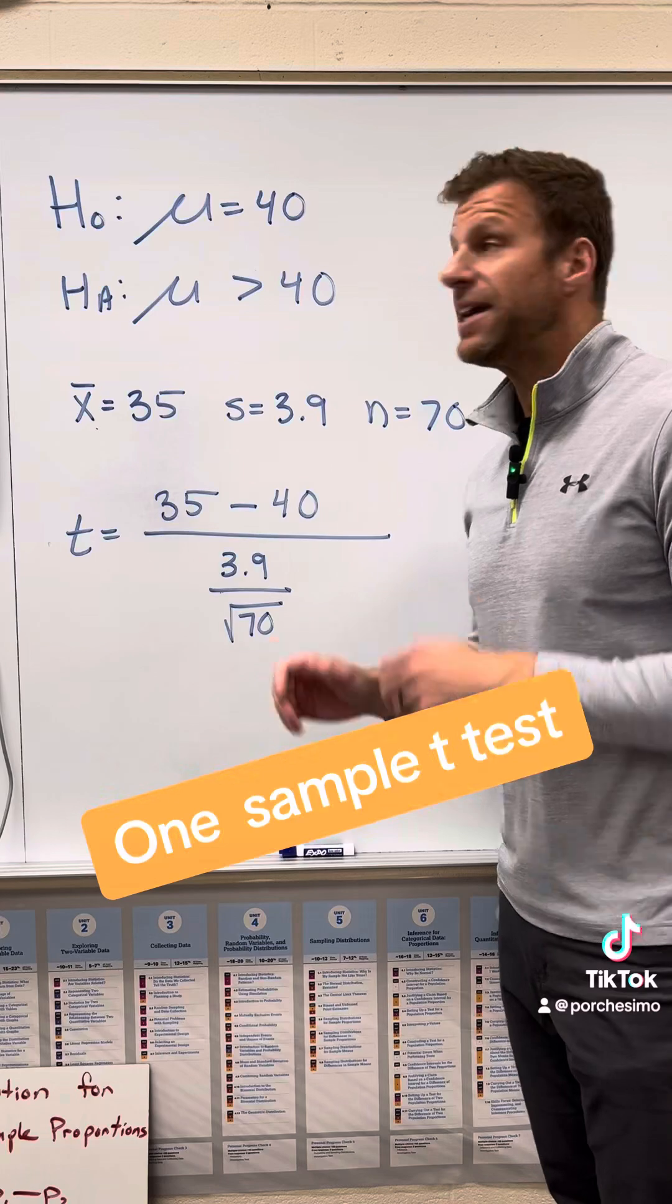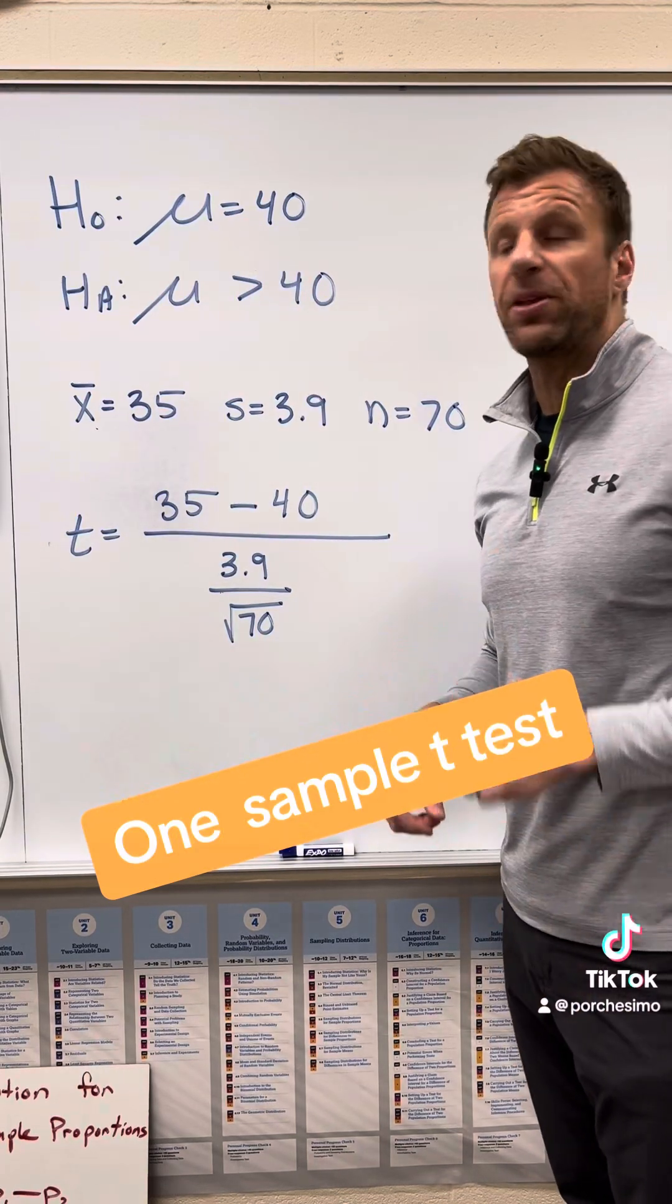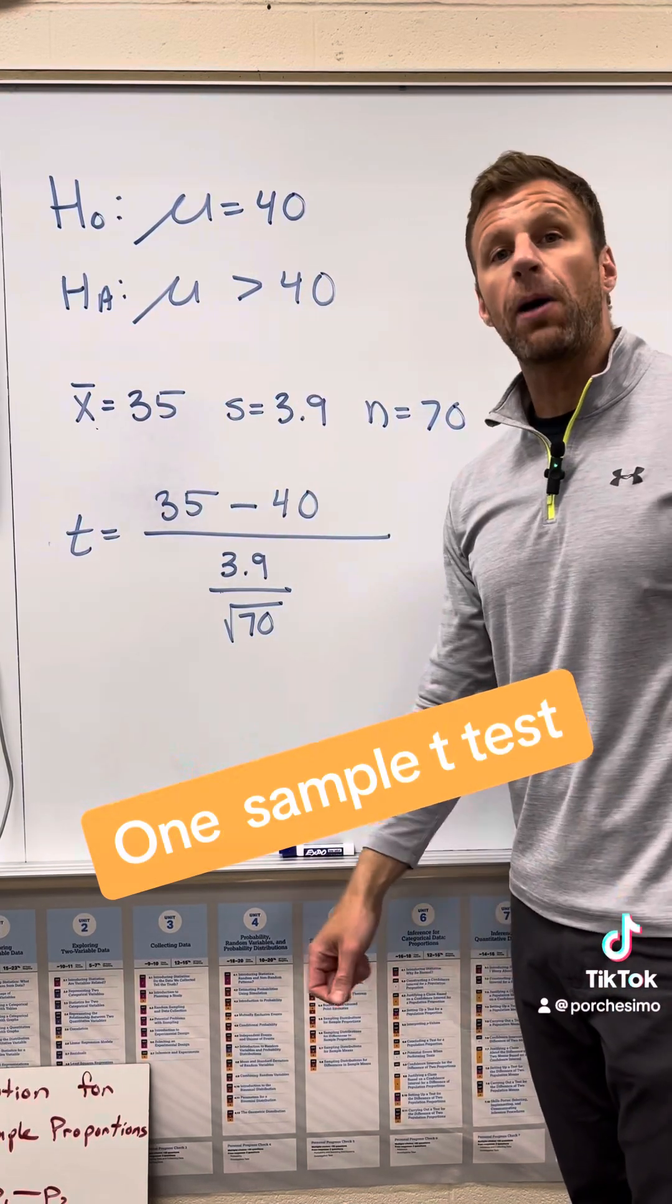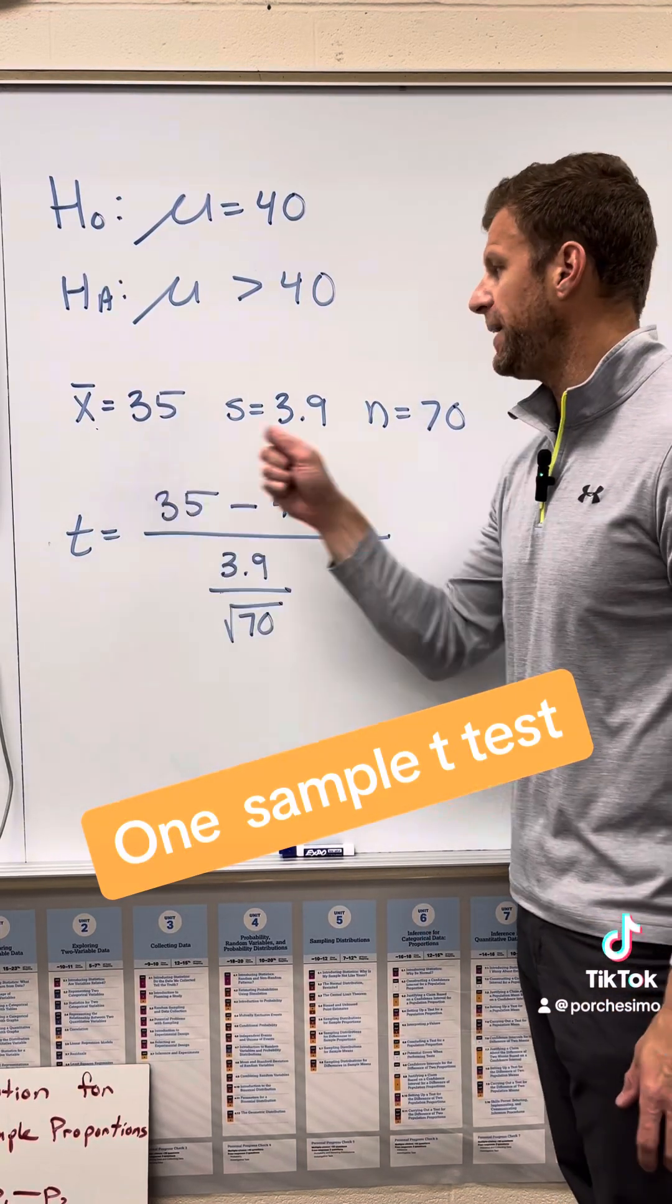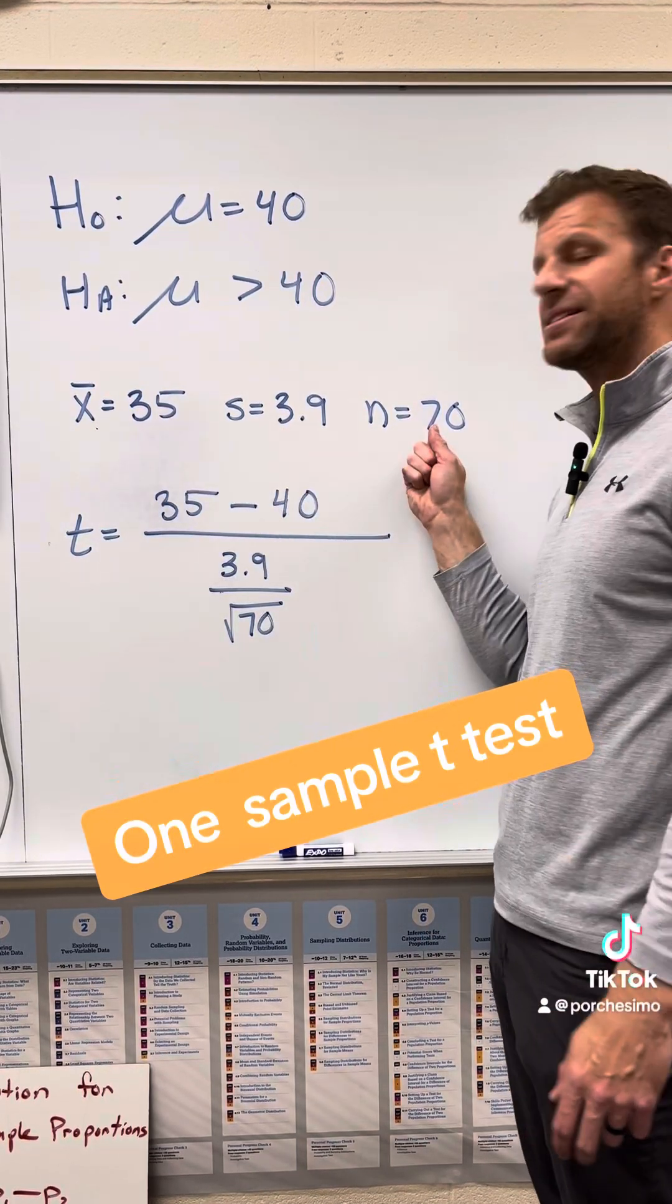Here is a one sample t test. So the null hypothesis: the population mean is 40. The alternative: the population is greater than 40. Now here's what our sample showed us: sample mean, sample standard deviation, and sample size.